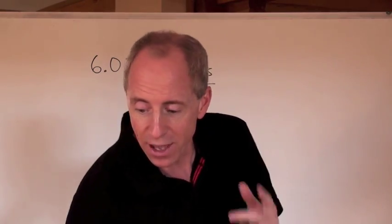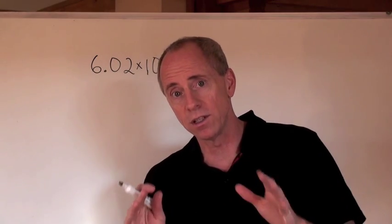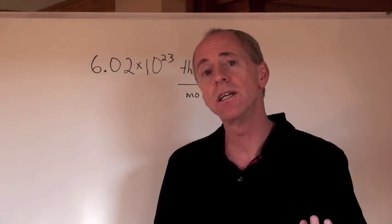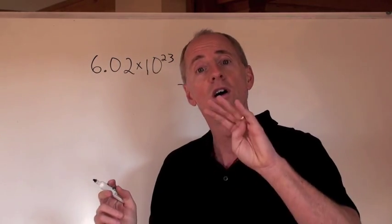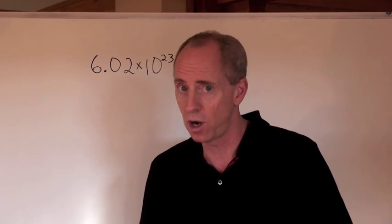Here's the thing. That number, 6.02 times 10 to the 23, I want to give you a little recap of that. That has three significant digits. Actually, that number is 6.022 times 10 to the 23 if you get four significant digits. Remember what the significant digit rules are.